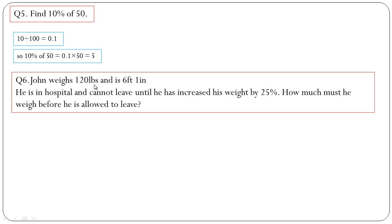Question number 6: John weighs 120 lbs and is 6 feet 1 inch. He is in hospital and cannot leave until he has increased weight by 25%. How much must he weigh before he is allowed to leave? 25% means we can divide 25 by 100, that will be 0.25.